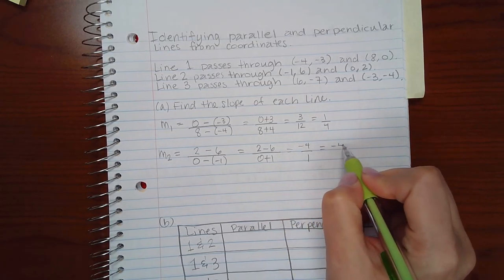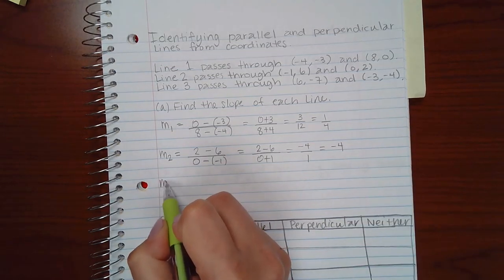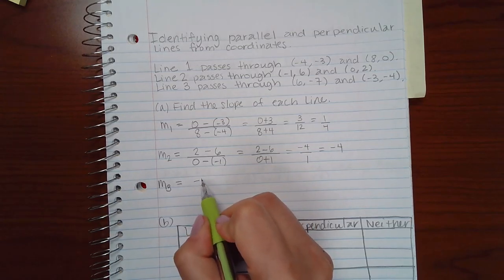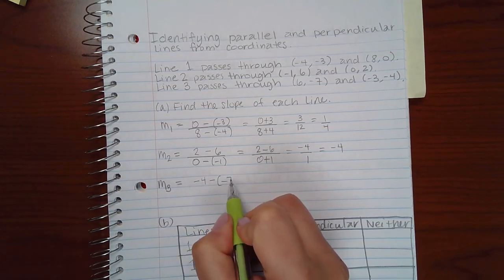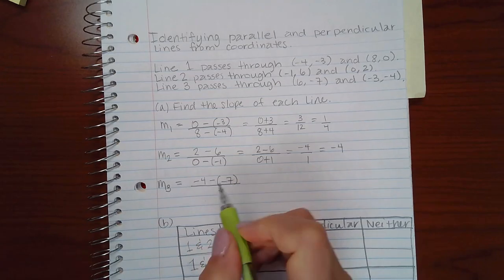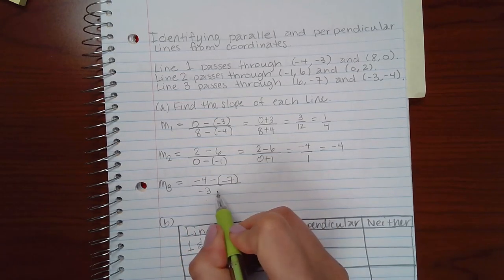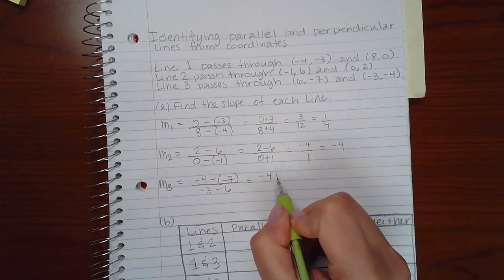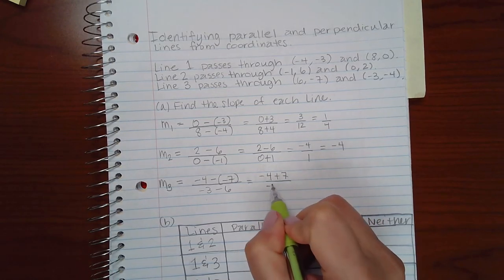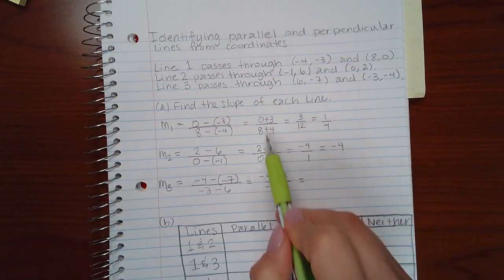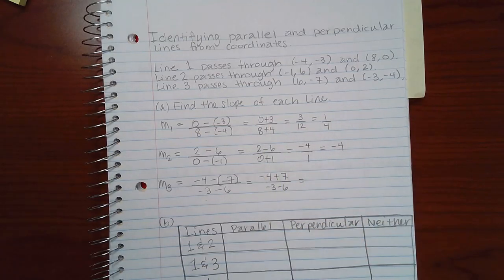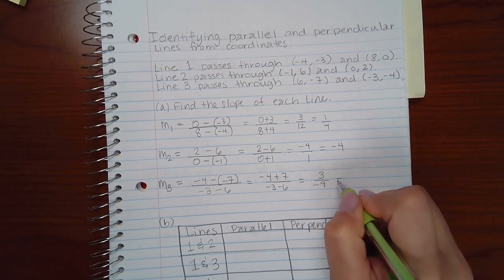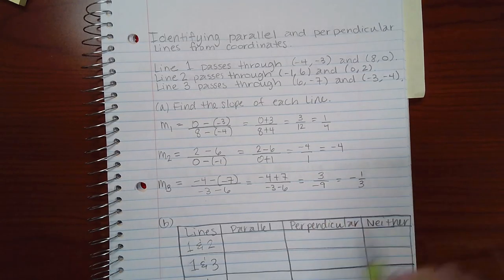Then if I want to find the slope of the third line, I have to do its second y value minus its first y value over its second x value minus its first x value. Here we get negative four plus seven. In this step all I'm doing is getting rid of double signs. So then I end up with three over negative nine, which is negative one-third.